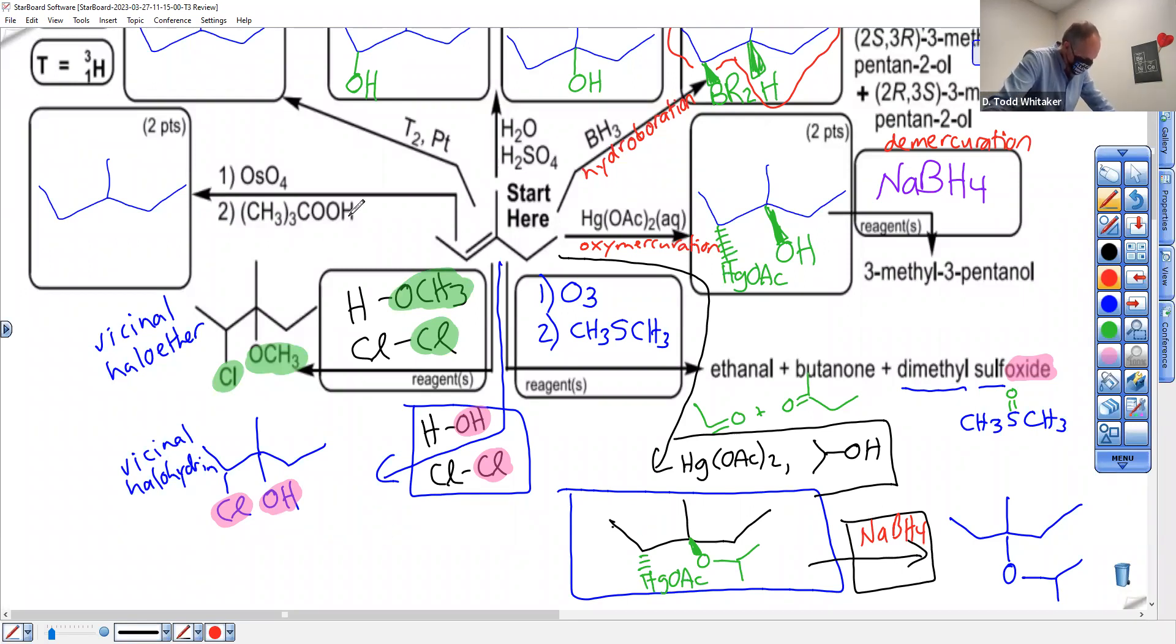Not quite done. We got the old OsO4 followed by the tert-butyl hydrogen peroxide. What groups do you get on your alkene this time? Alcohol. Plural. It's called a vicinal diol. And they go at the same time. So again, OH, OH. No triangle here. That's a vicinal diol. That's also known as a glycol. Got glycol in my radiator right now. Antifreeze.